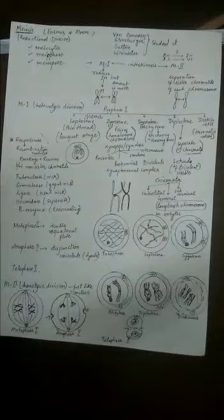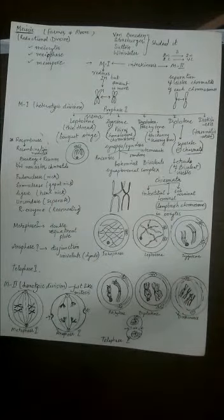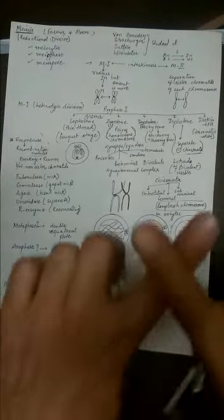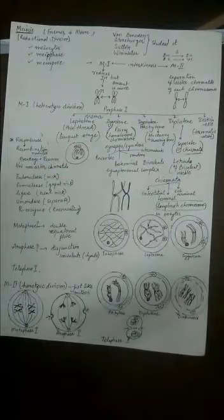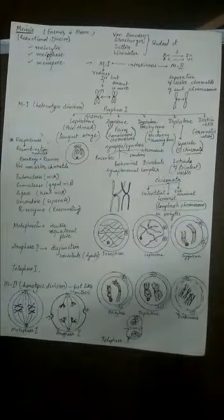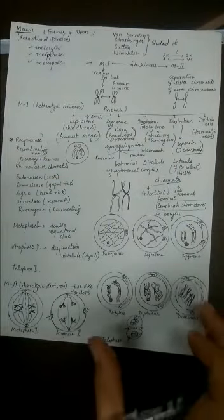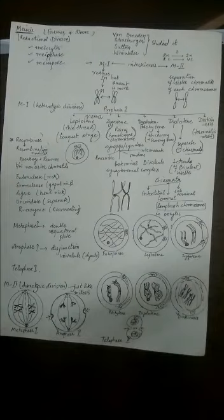The next is diakinesis. Diakinesis is when even the chiasmata gets over and now the chromosomes are completely separated. I hope this is clear to you. We'll carry on this concept once again through diagram in the next session.